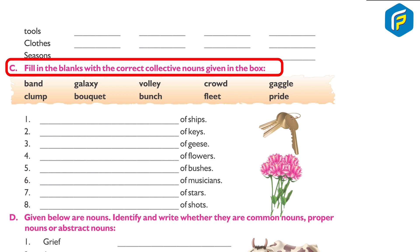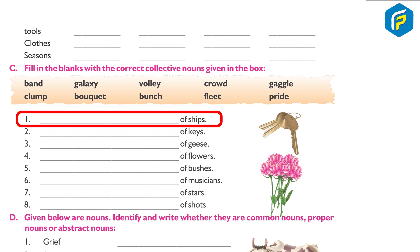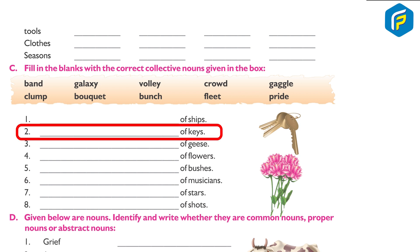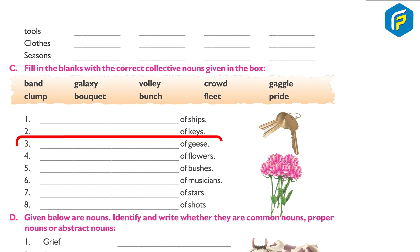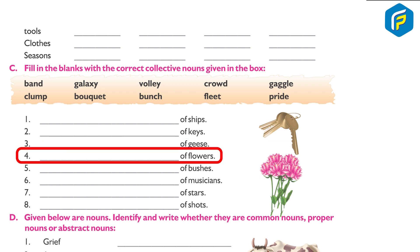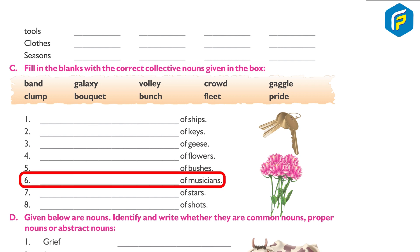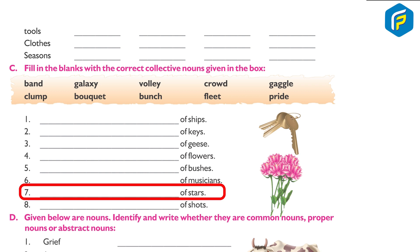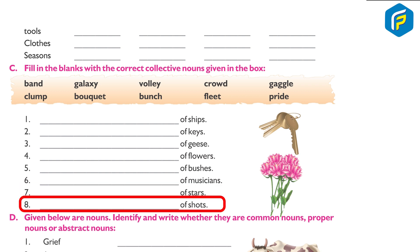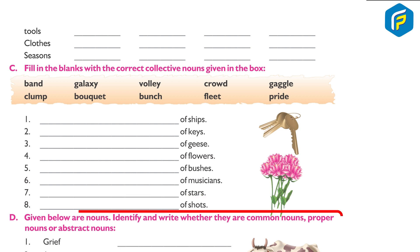(C) Fill in the blanks with the correct collective nouns given in the box. Answer: 1. fleet of ships; 2. bunch of keys; 3. gaggle of geese; 4. bouquet of flowers; 5. pride of lions; 6. band of musicians; 7. galaxy of stars; 8. volley of shots.